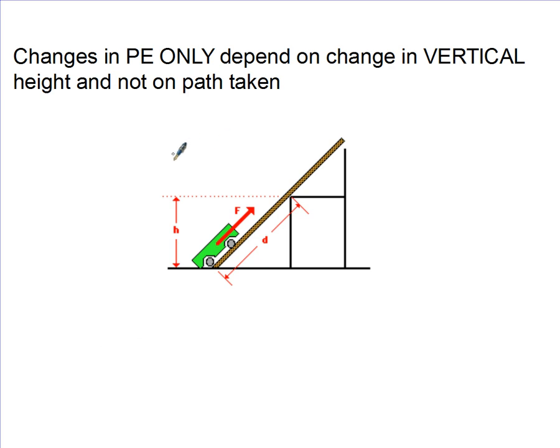This is kind of cool. The potential energy only depends on the vertical change, not the path taken. So if I were to lift this straight up, the change in potential energy is the same as if I lifted up this thing twice.